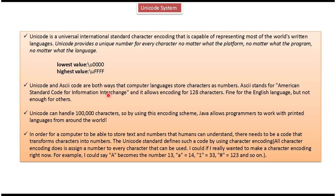Using Unicode and ASCII code, computer languages can store characters as numbers. ASCII stands for American Standard Code for Information Interchange. It allows encoding for 128 characters, which is fine for the English language but is not enough for other languages.